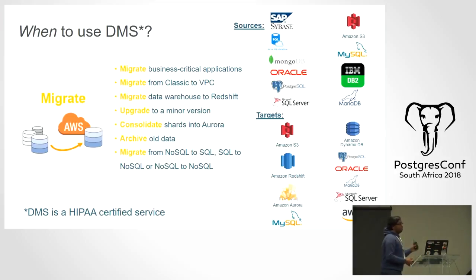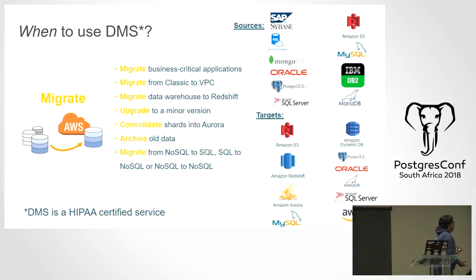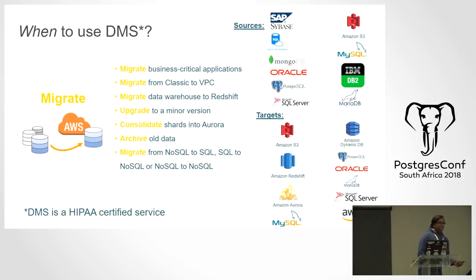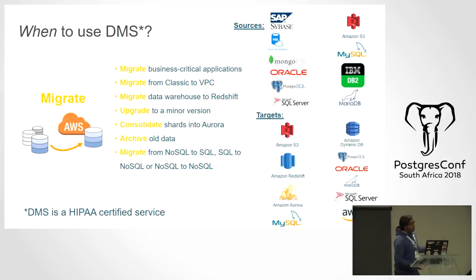DMS is responsible for migrating your existing data and moving it to the engine you have selected. Sources include Sybase, S3, Oracle, and DB2; targets include DynamoDB, Redshift, and Postgres. Customers use DMS to migrate business-critical applications, move from classic instances to VPC, migrate SQL Server and Oracle data warehouses to Redshift, create Aurora shards by consolidating databases, and archive old data. DMS also supports NoSQL-to-SQL, SQL-to-SQL, and NoSQL-to-NoSQL migrations.